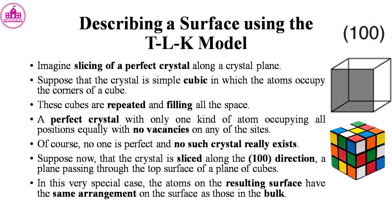Imagine slicing a perfect crystal along a crystal plane. Suppose that the crystal is simple cubic in which the atoms occupy the corners of a cube. These cubes are repeated filling all the space — a perfect crystal with only one kind of atom occupying all positions equally with no vacancies on any of the sites.